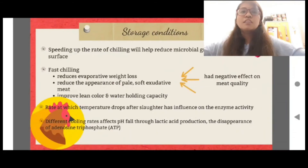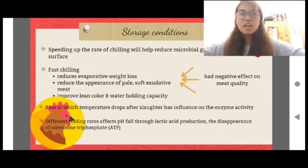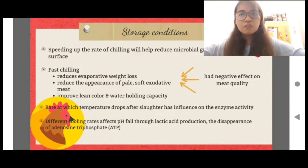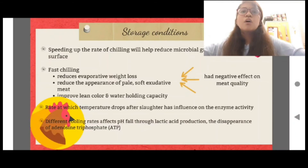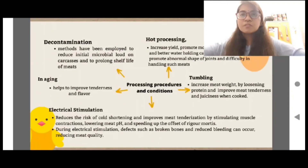Regarding storage conditions: speeding up the rate of chilling will help reduce microbial growth on the carcass surface. Fast chilling reduces evaporative weight loss, reduces the appearance of pale, soft, and oxidative meat, and improves color and water holding capacity. The rate at which temperature drops after slaughter influences enzyme activity. Different cooling rates affect pH fall through lactic acid production and disappearance of ATP. When muscles are cooled below 10 degrees Celsius before the onset of rigor mortis, cold shortening occurs, which makes the meat tough when cooked.